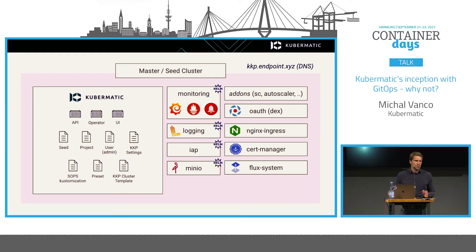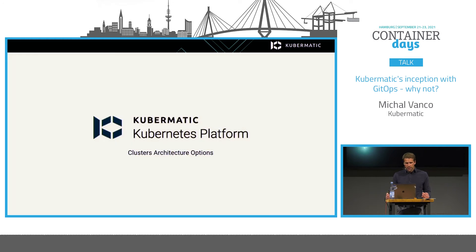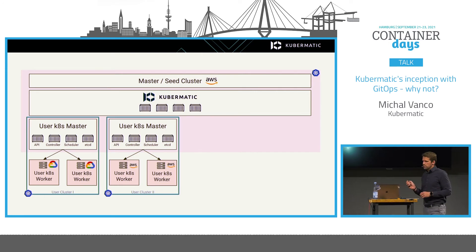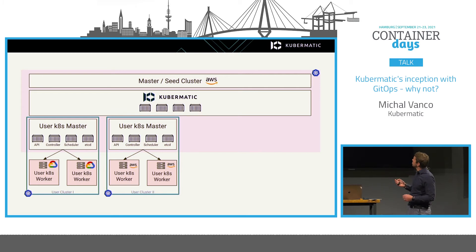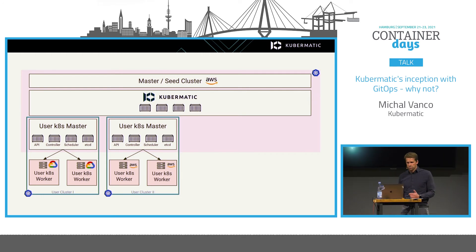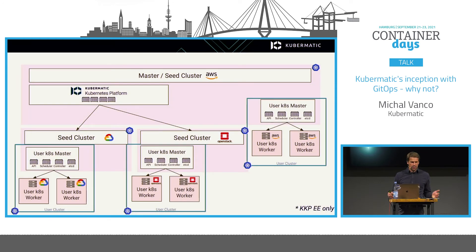Let's look at the high-level architecture of Kubermatic and user clusters. Once your Kubermatic platform is running, you can create new clusters. In this example, two user clusters are created, with their control plane components provisioned inside the master/seed cluster. You can create clusters across different providers. There's also a different architecture approach for scaling in multi-cloud environments.